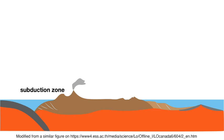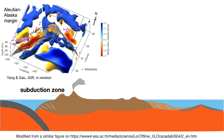My research has contributed to our understanding of lithosphere dynamics in different tectonic settings. At the subduction zone, we have two plates colliding with each other — one plate subducts underneath the other. Along the Aleutian-Alaska margin, we have constructed a high-resolution seismic image of the subduction zone, which helps us understand the distribution of volcanoes, earthquakes, and the development of the subduction zone.